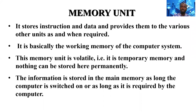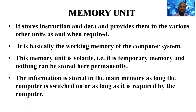Let's also talk about the memory unit. The memory unit stores instructions and data and provides them to the various units as and when they are required. It is basically the working memory of the computer system. This memory unit is volatile — that is, temporary — normally known as the RAM. The RAM is a typical example of a volatile memory unit. Information is stored in main memory as long as the computer is switched on or as long as it is required.